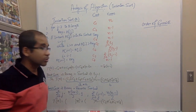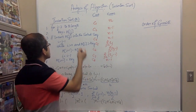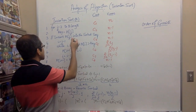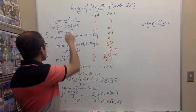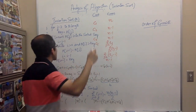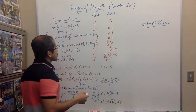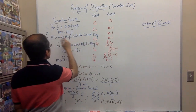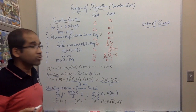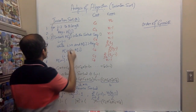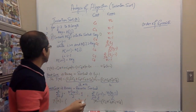The second statement, storing A[j] into the variable key, executes n minus one times because the last time the for loop condition is not satisfied, so it does not enter. Any statement inside a loop executes one fewer time than the loop condition itself. The cost is c2. The third statement is a comment, also executing n minus one times but with cost zero since it is not executable. The fourth statement, i = j - 1, also executes n minus one times with cost c4.